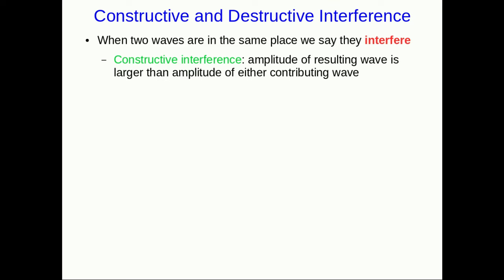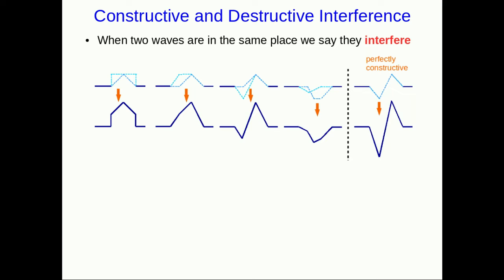So that happens when the displacements due to both waves are in the same direction. So here are a bunch of different examples of constructive interference where the displacements are adding together. Note these are both negative and so we get a larger negative wave, but that's still constructive. You're getting a larger result than either of the individual waves. In the special case that the two waves are identical so that they add together to momentarily give a wave twice the size, we call that perfectly constructive interference.